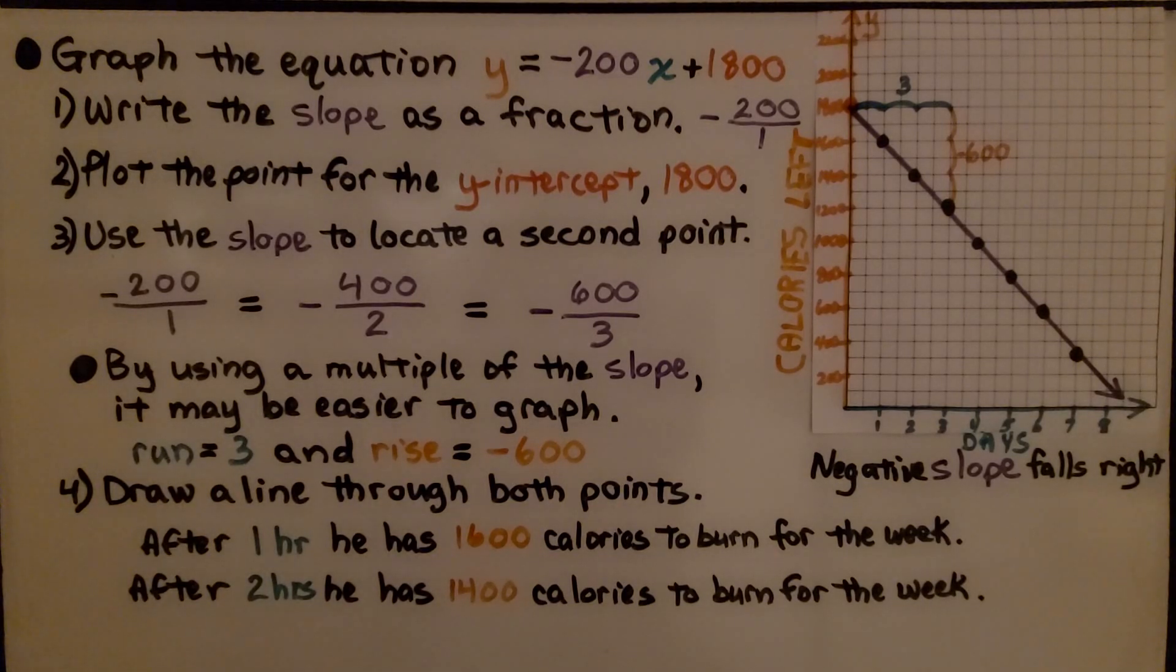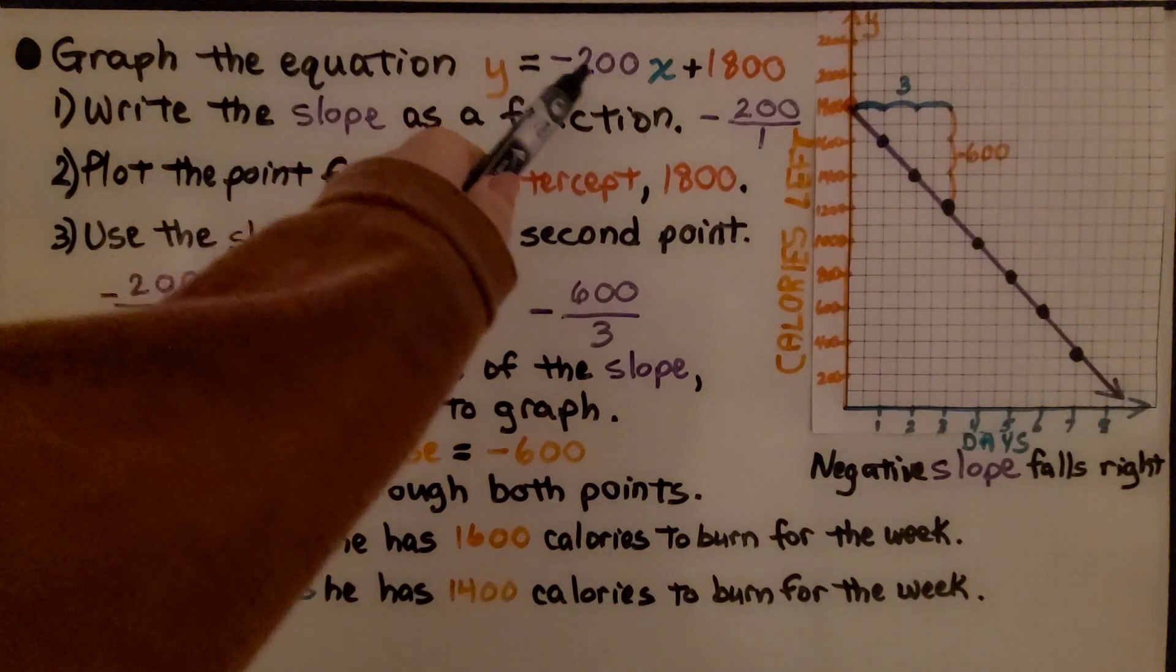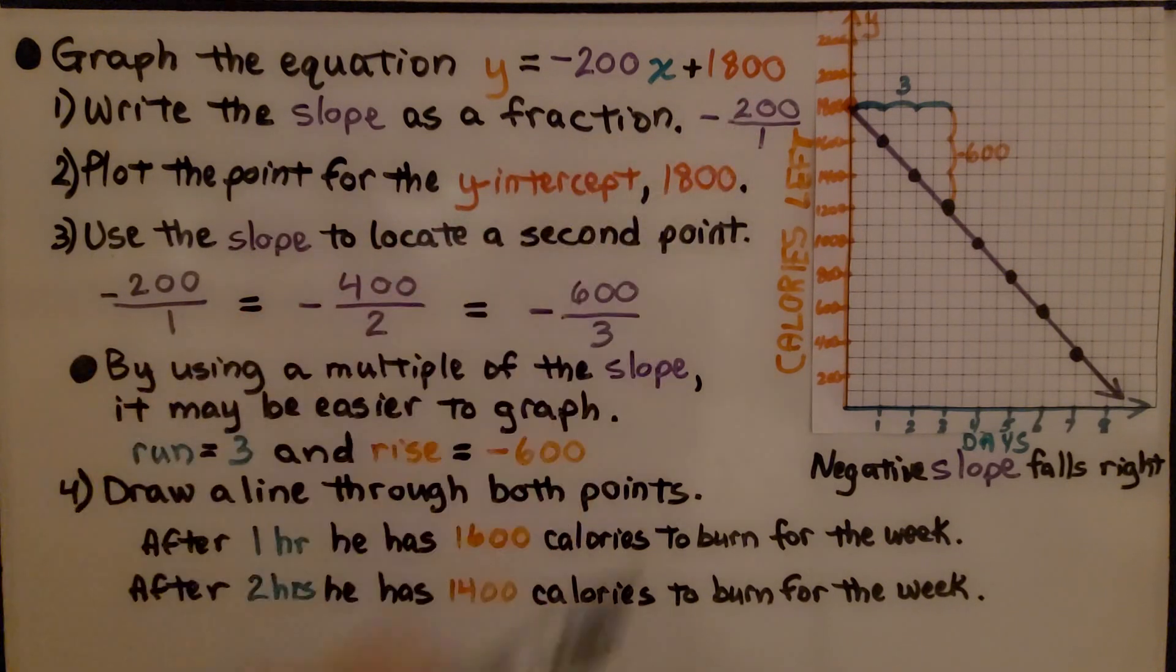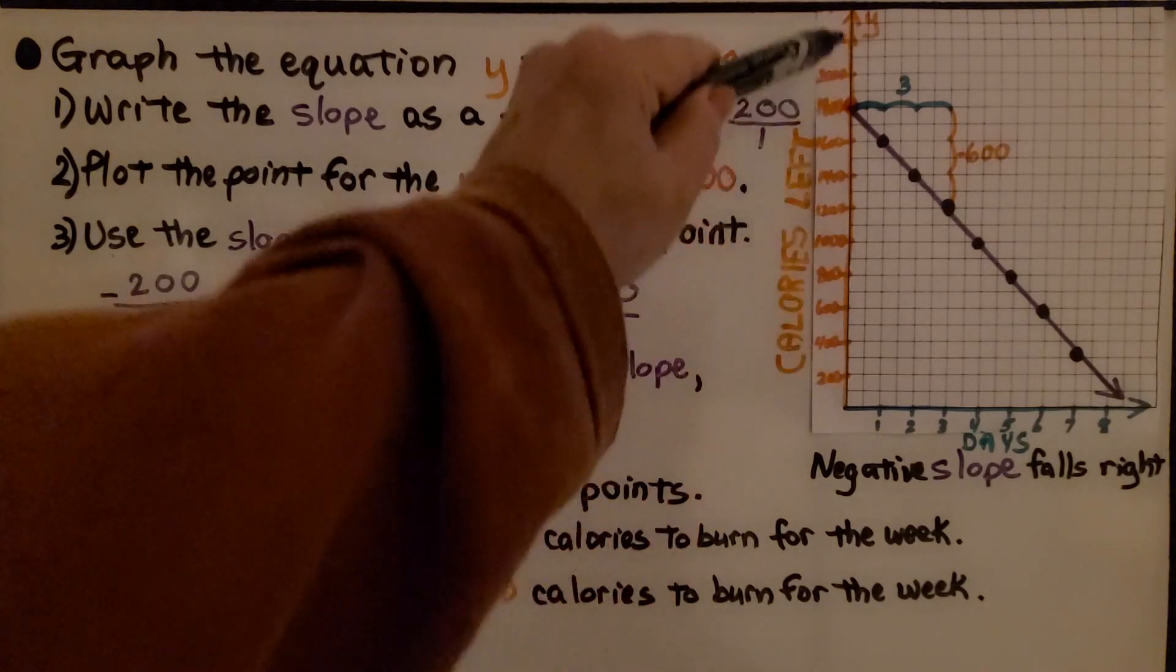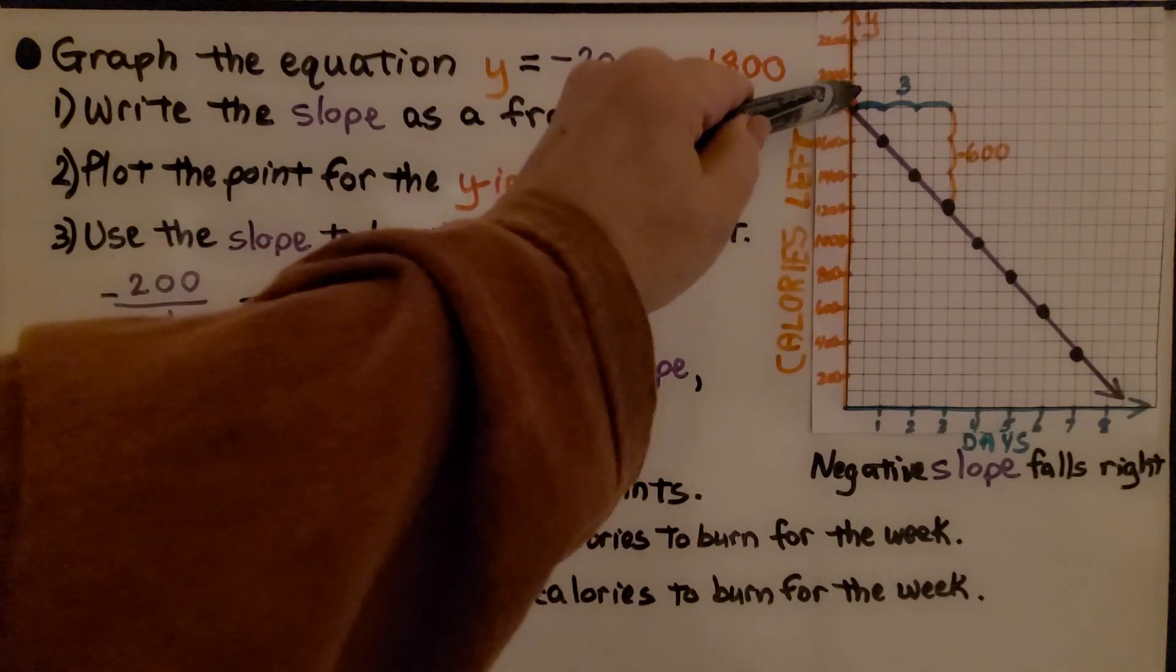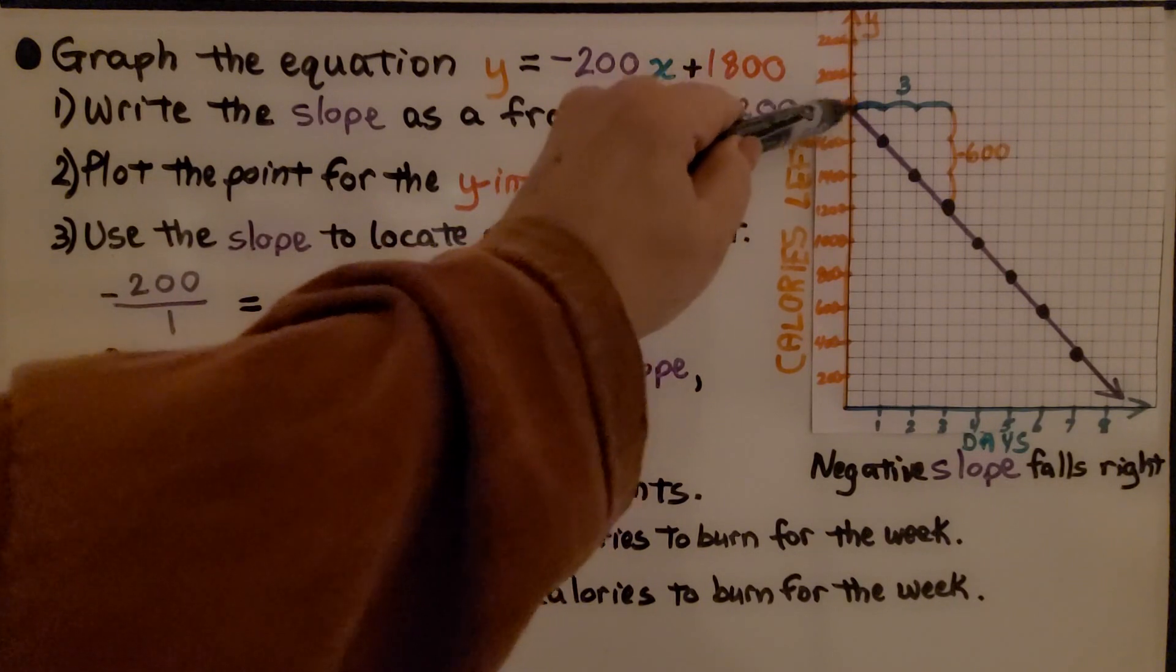We graph the equation y = -200x + 1,800. First thing we do is write the slope as a fraction. We have -200 over 1. Now we plot the point for the y-intercept, 1,800. So here's the y-axis. We plot the 1,800 on the y-axis.